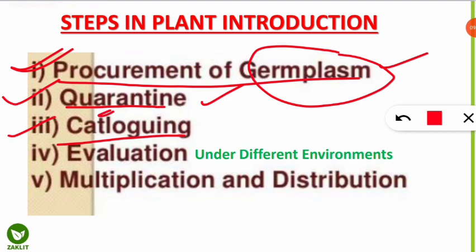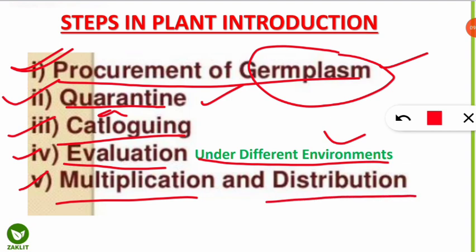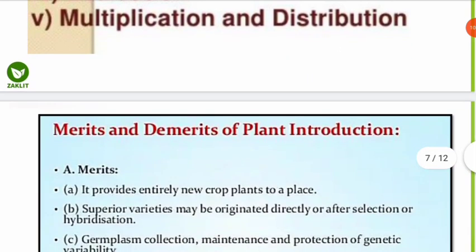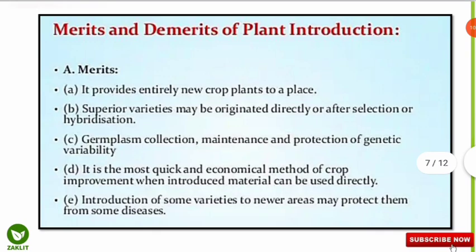Step three is cataloging — we give certain names and tags to the new varieties of crops being introduced. Step four is evaluation — we evaluate the crop under different environmental conditions, altering temperature, water, and other factors to check whether it is suitable. Finally, step five is multiplication and distribution — we multiply the plant by breeding techniques and distribute it to farmers and seed distributors to increase production. These five steps are: procurement of germplasm, quarantine, cataloging, evaluation, and multiplication and distribution.